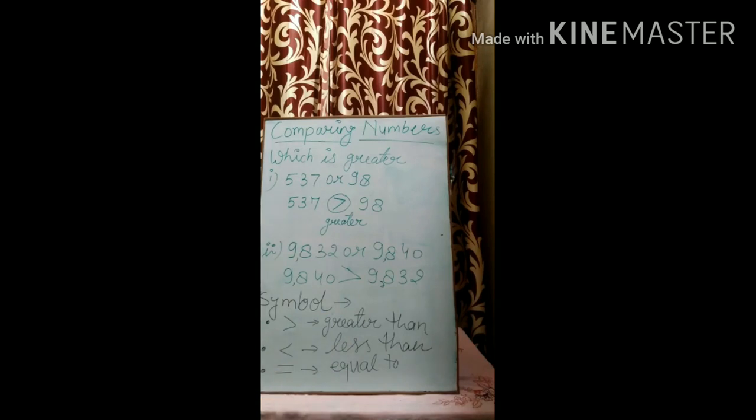We can see here it is of three digits and it is of two digits. It is very clear 537 is greater than 98. Next, 9832 or 9840.